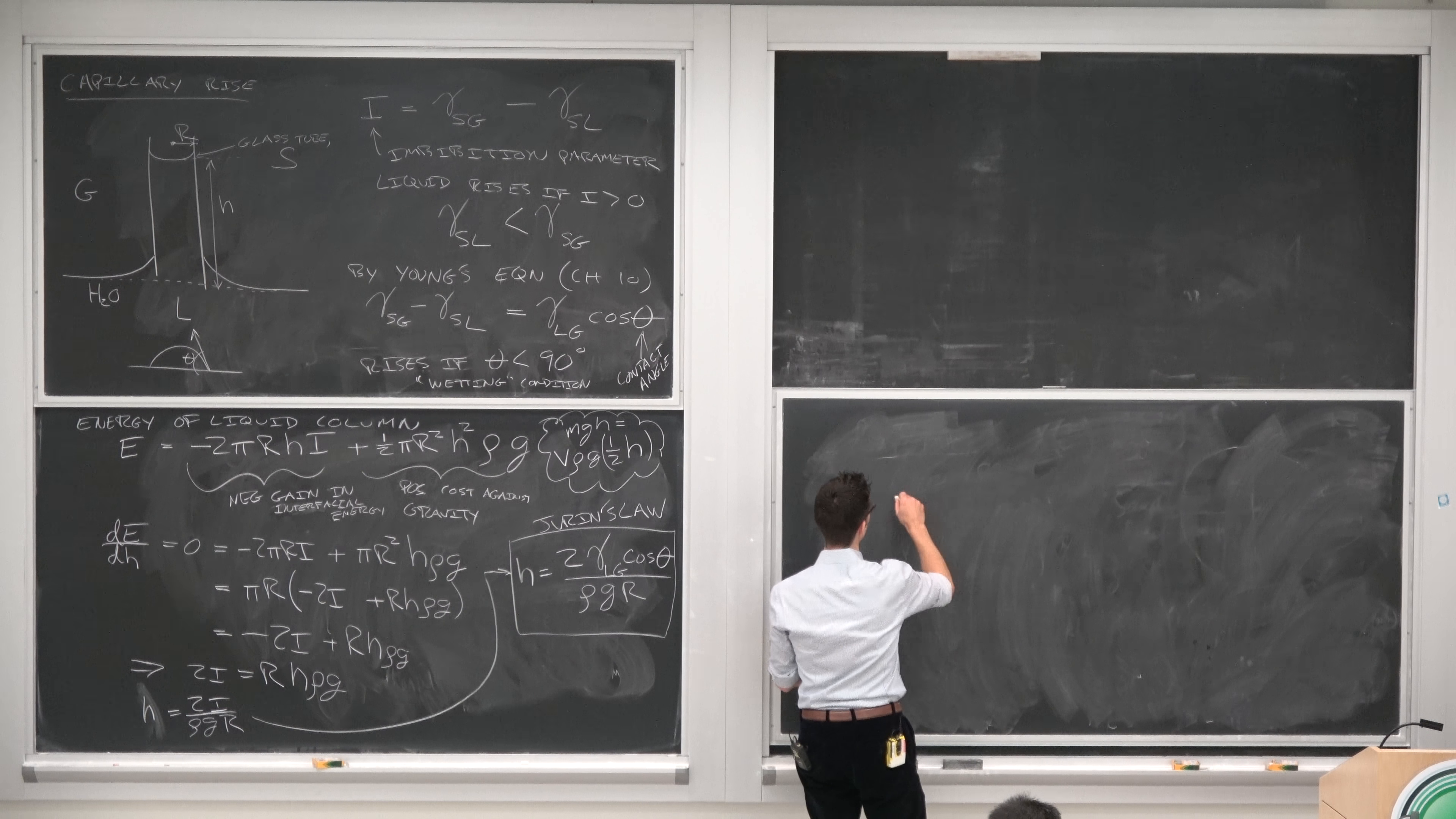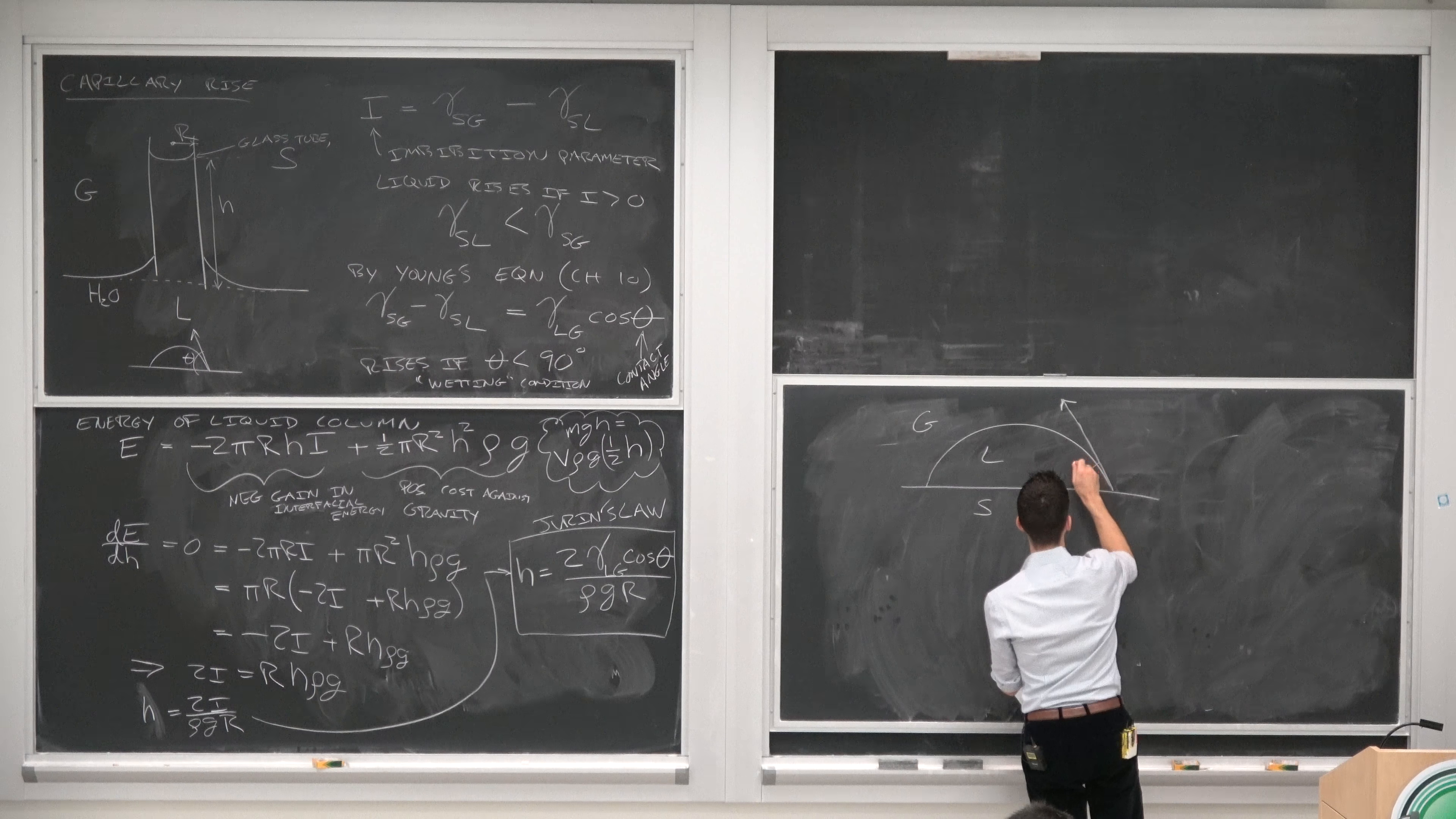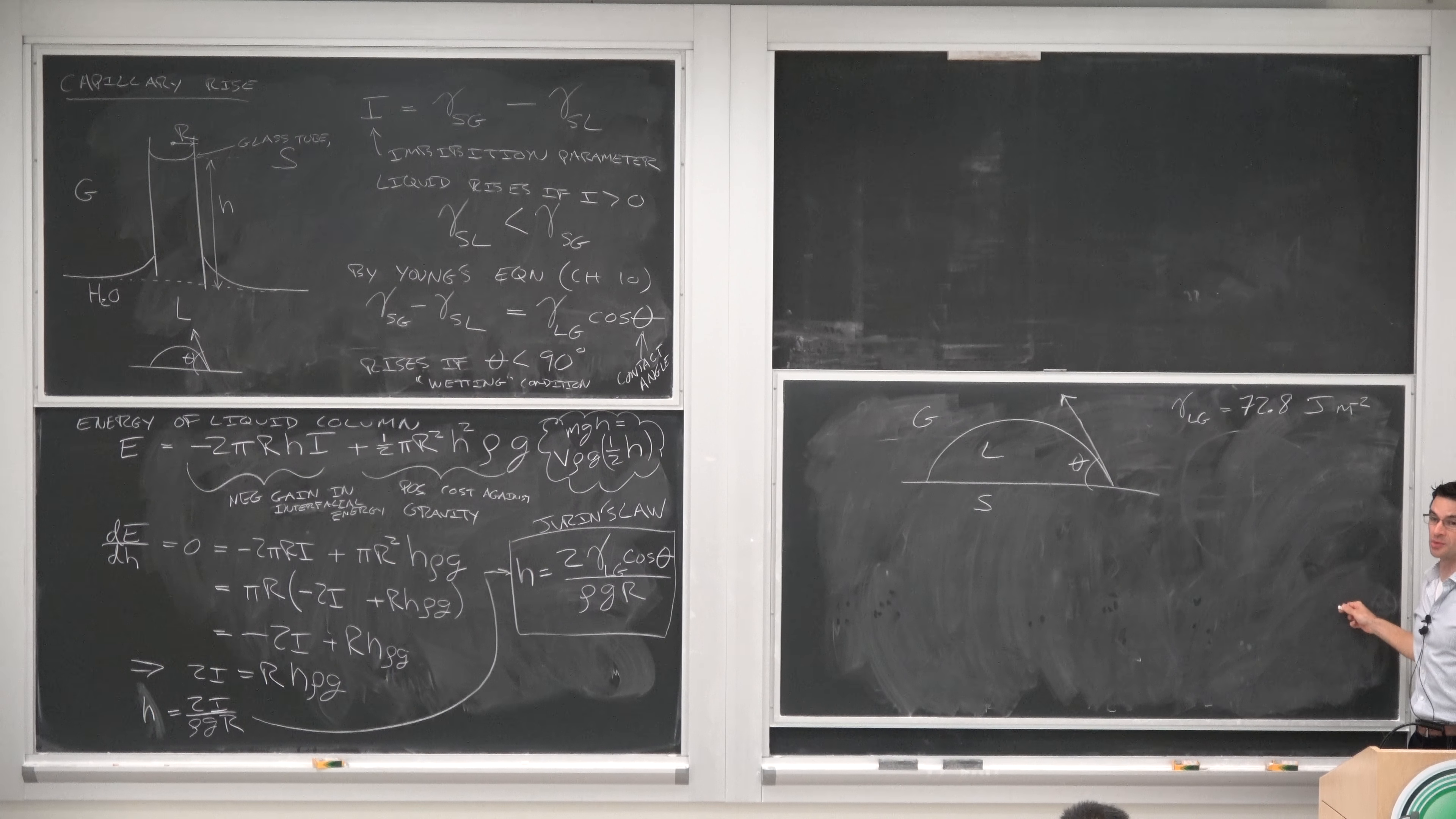Suppose you had a droplet of water on some surface. This is the gas, liquid, and solid, and this is the contact angle theta. And we're told that the surface energy, surface tension of water is 72.8 joules per square meter or newtons per meter.